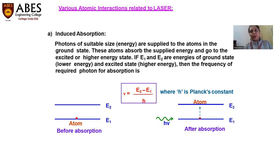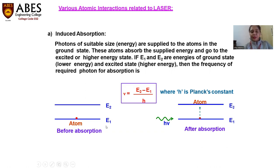If we are giving some energy, this means somehow we have taken that energy. For various atomic interactions and kinds of radiations involved in laser, we can explain it with a single two-level system. E1 is the lower energy level and E2 is the higher energy level. By default, due to stability, the atom always resides in the ground state.